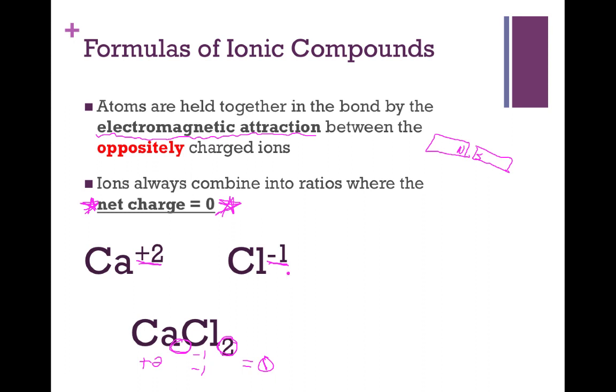We'll get a lot more practice with this when we start talking about nomenclature in the next sections. Right now, we're just trying to establish the idea that the net charge on an ionic compound has to add up to zero.